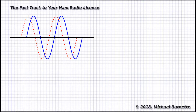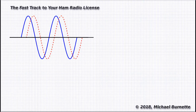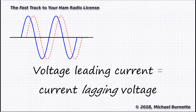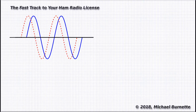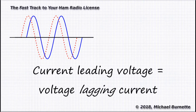When we say the voltage is leading the current, as it does across an inductance, we mean the voltage happens before the current. We could also describe that as the current is lagging the voltage. They use both leading and lagging in the language of the exams — you have to have those sorted out. When we say the current is leading the voltage, as it does across a capacitance, that means the current happens first, followed by the voltage. Of course, we could also say the voltage is lagging the current.